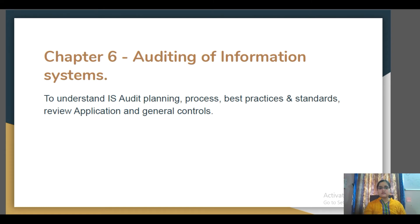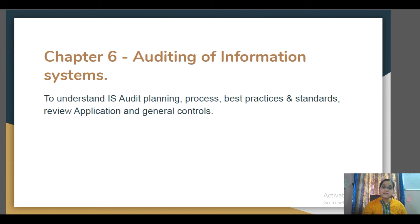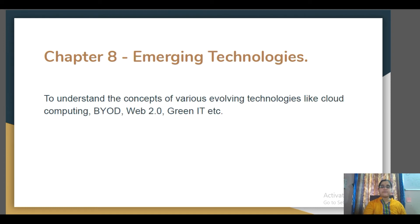We need confirmation from an outside party that the information system being implemented in the organization is up to the mark. So an audit needs to be done. In this chapter we will be seeing what IS audit is, how it is being planned, and what are the best practices and standards for the auditing of information systems.